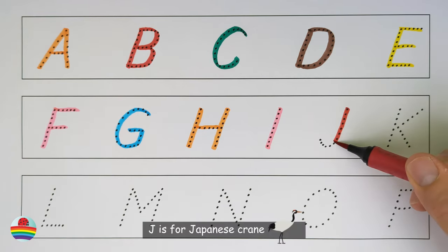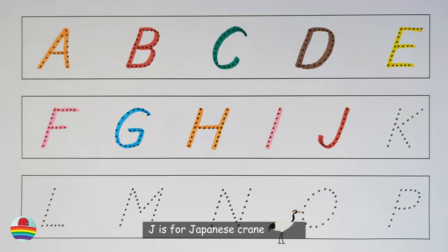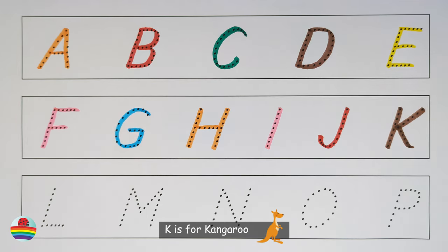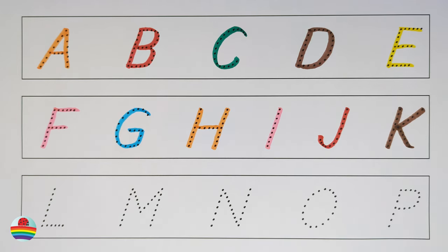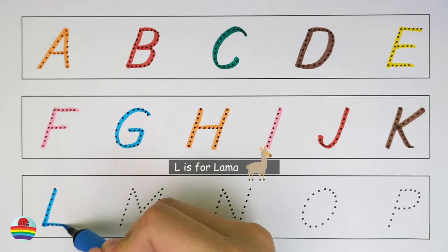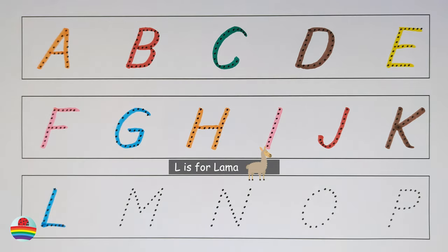J is for Japanese crane. K is for kangaroo. L is for llama.